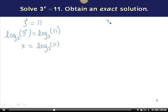Let's take the natural log of both sides of our equation and see what happens. So we'd have ln(3^x) = ln(11).